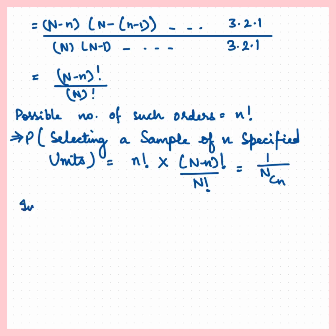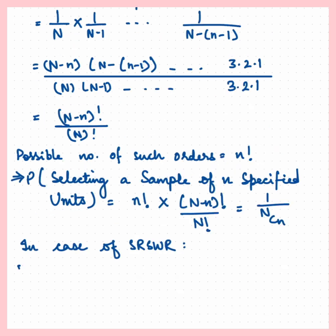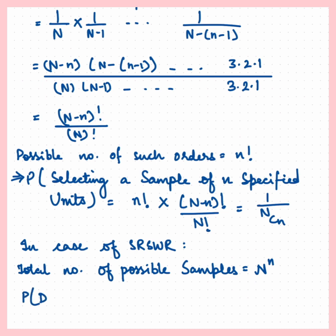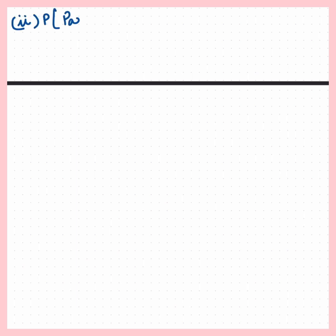In the case of simple random sampling with replacement, the total number of possible samples equals N to the power n. Hence, the probability of drawing a sample equals 1 / N^n. The total number of ordered samples is nPn.